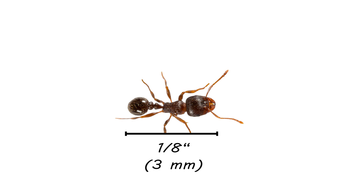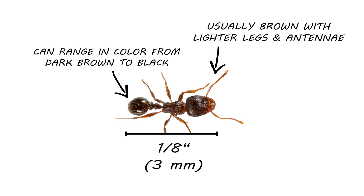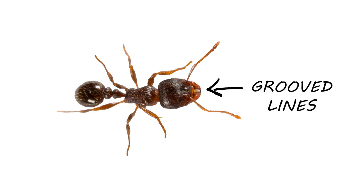Pavement ants are very small, typically an eighth of an inch long. They can range in color from dark brown to black, but are usually brown with lighter legs and antennae. They have two nodes on the petiole, and their defining trait is grooved parallel lines along the head and thorax.